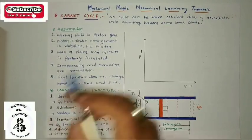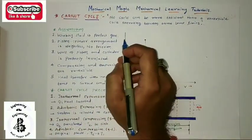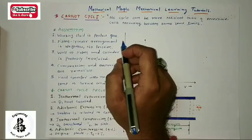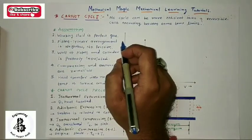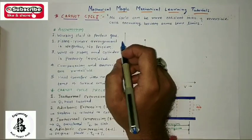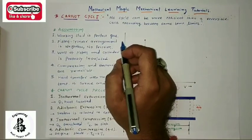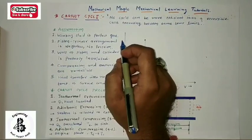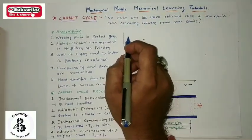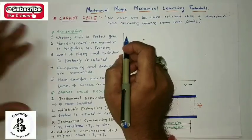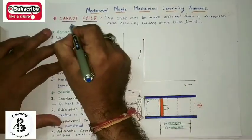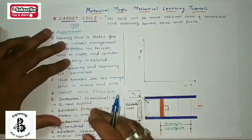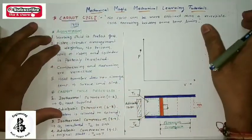Generally the Carnot cycle was established in 1824 by Sadi Carnot. The concept of a heat engine working on a reversible cycle is called a Carnot cycle, and it was invented in 1824 by Carnot.